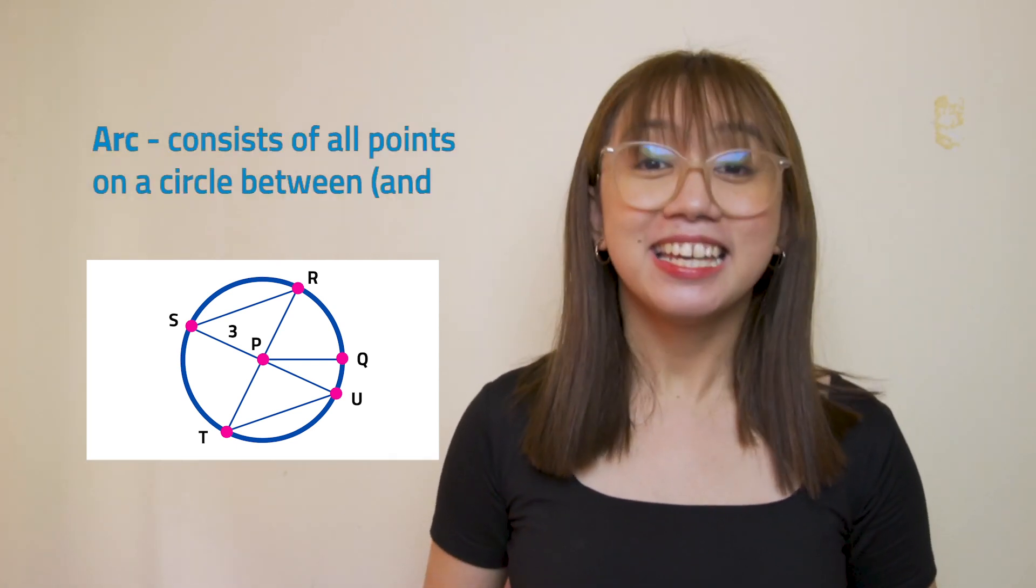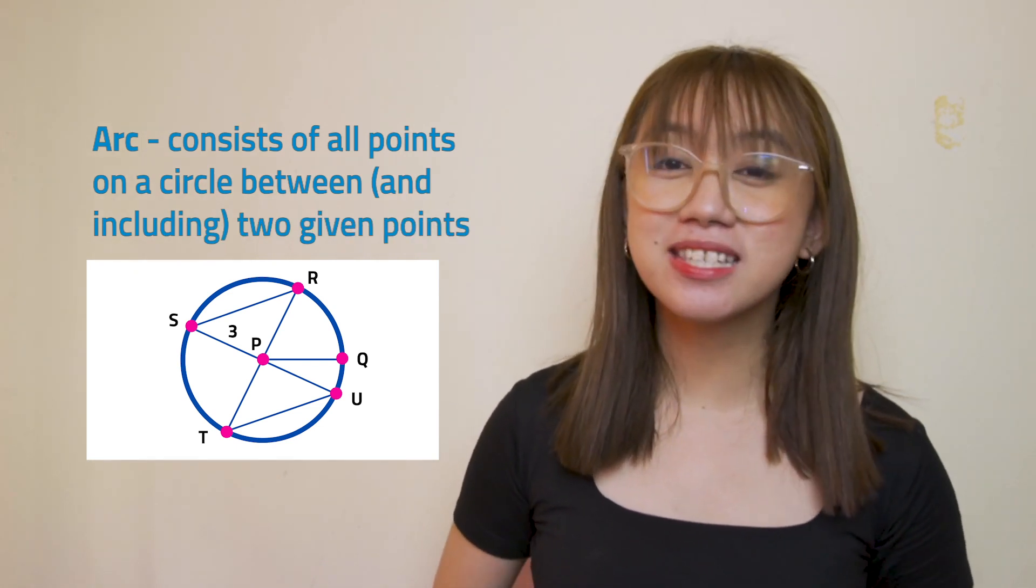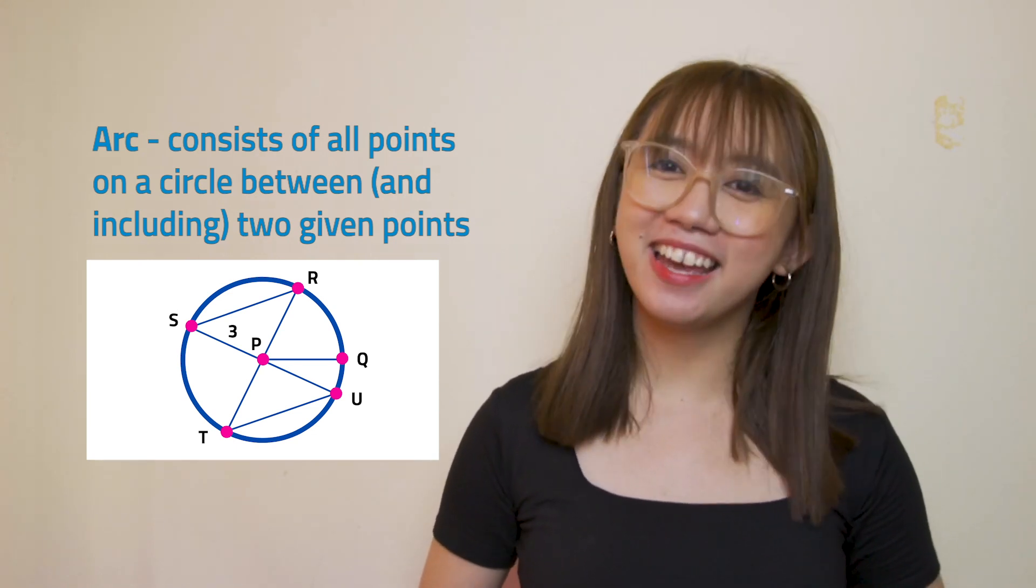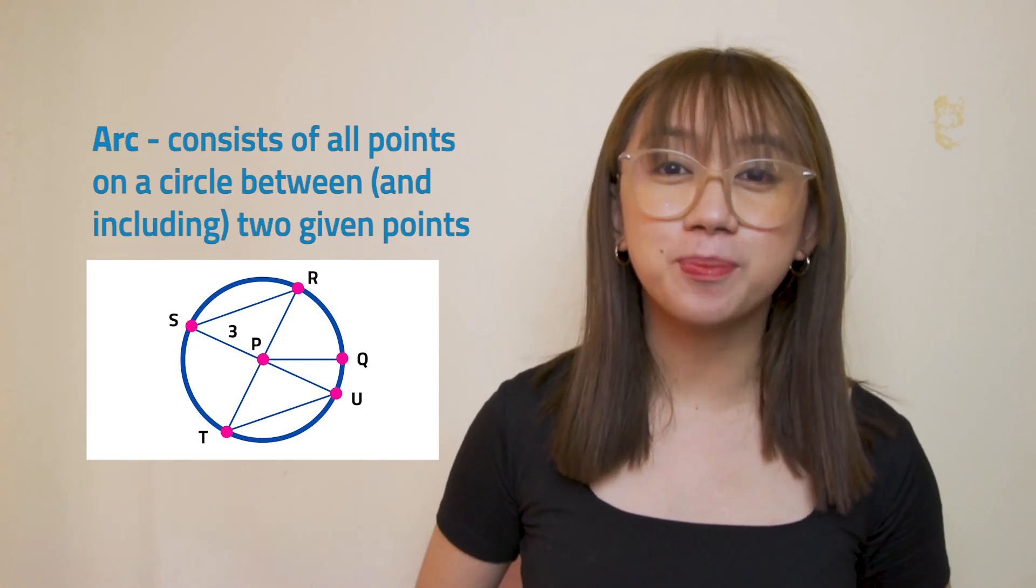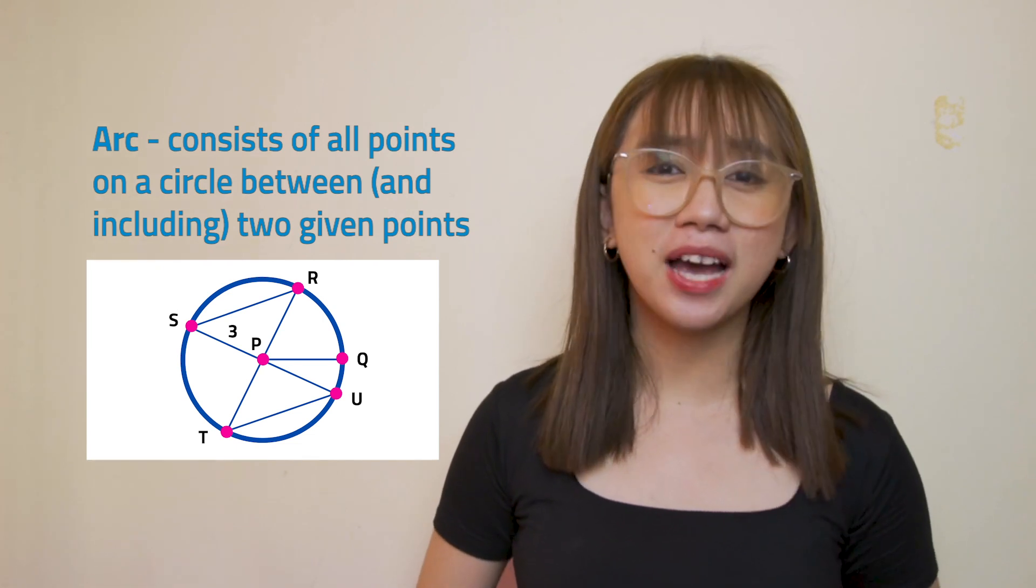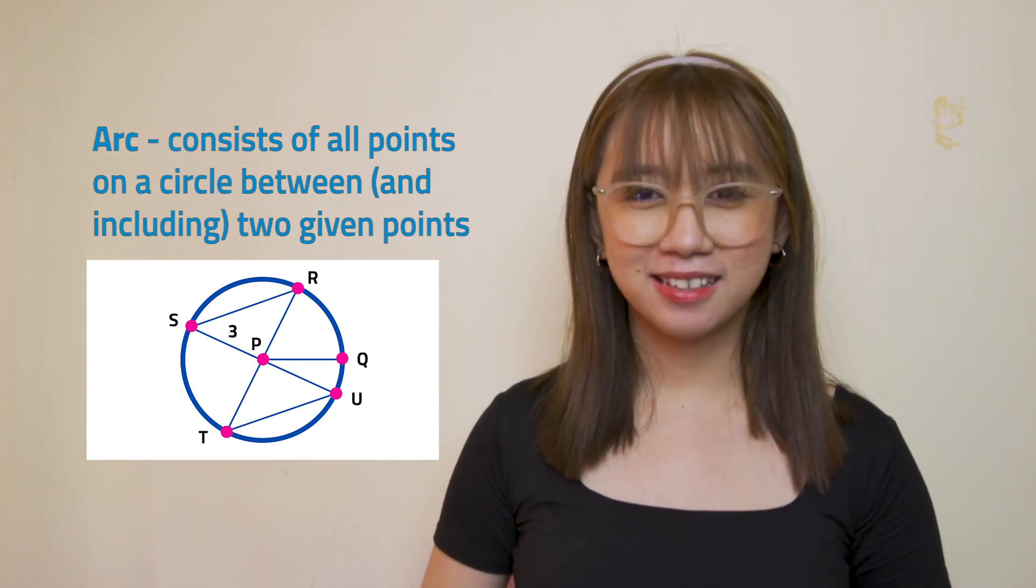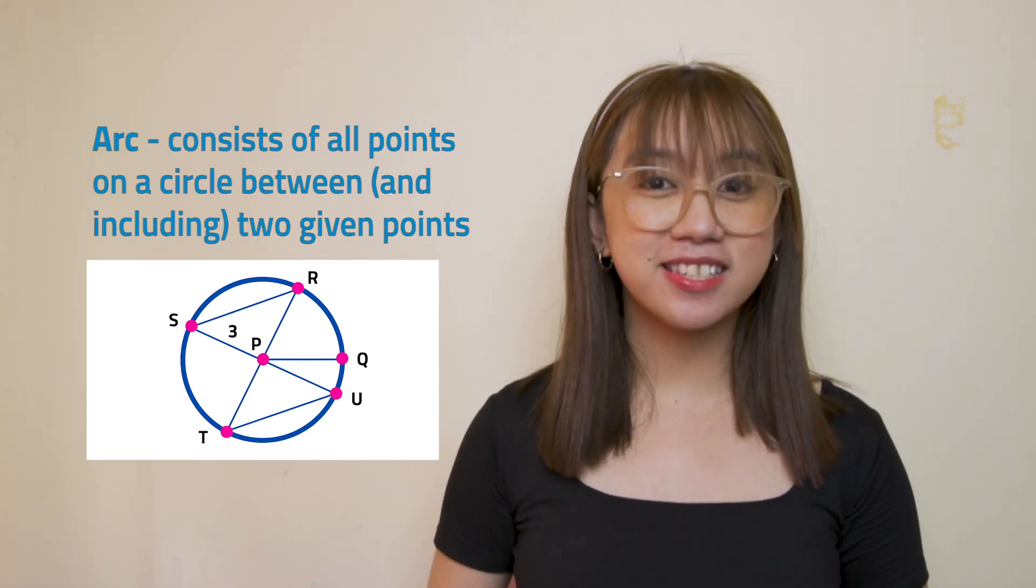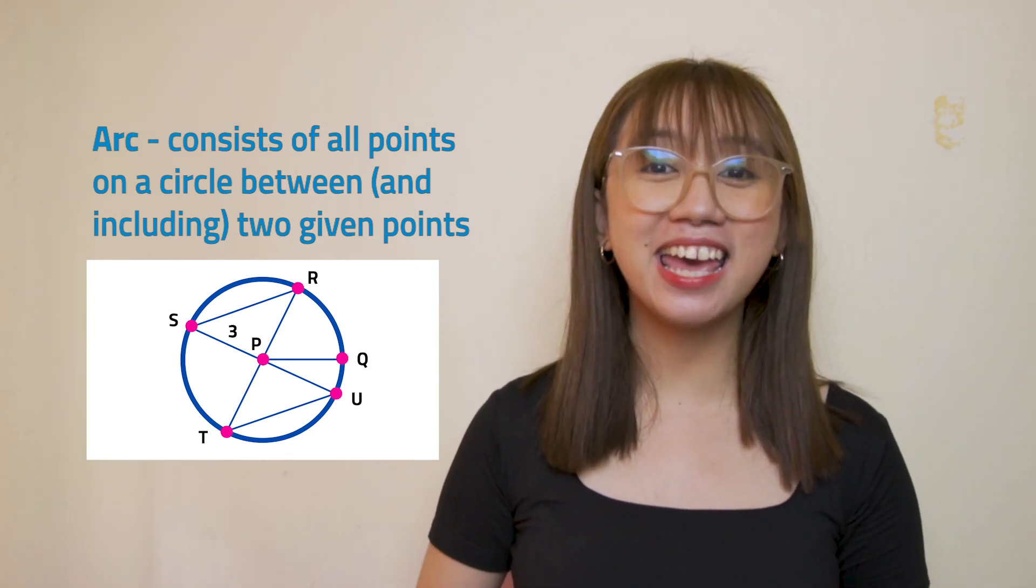Fourth is the arc. It is an unbroken part of a circle. It consists of all points on the circle between and including two given points. These two given points are the endpoints of the arc. Now, can you find the arcs in circle P? Splendid! Some examples are arcs SR, RQ, SU, and UT.